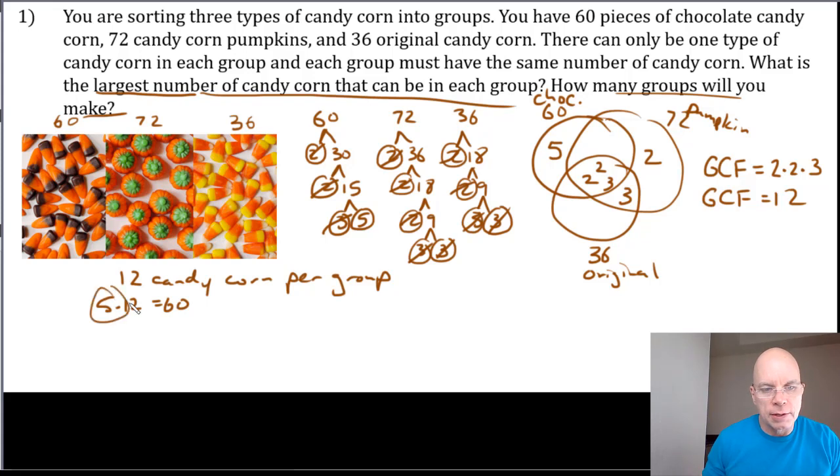For the original, 3 times 12 is 36, so three groups of original candy corn. And then for the pumpkin, 6 times 12, 2 times 3 is 6, 6 times 12 is 72. So the number of groups would be 5 and 3 and 6, or 14 groups total.